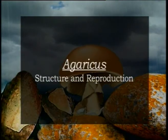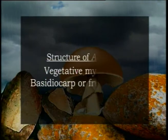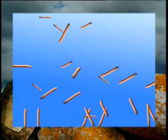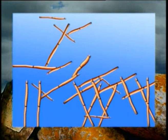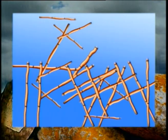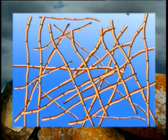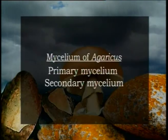Since the current lecture is about the important features and life history of Agaricus, we will discuss it under two sections: structure and reproduction. When we talk about the structure of Agaricus it can be divided into two parts: vegetative mycelium and the basidiocarp or fruiting body. The vegetative plant body consists of a subterranean mycelium. Based on the stage of development and complexity, the mycelium of Agaricus is of two types: primary mycelium and secondary mycelium.